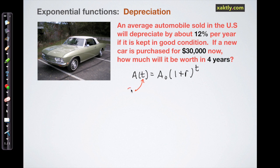So let's start by figuring out what we know and don't know. We're trying to find the final amount so we don't know that. We know that the initial amount is $30,000. We know that the rate is 12%, but it's negative 12%, so negative 0.12, and the time is going to be four years.